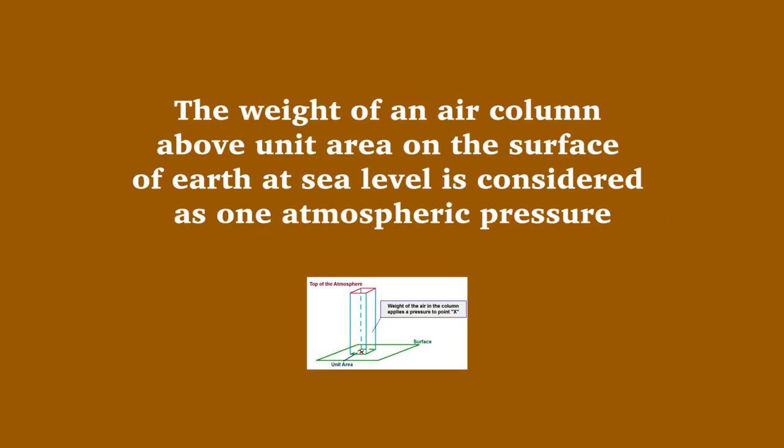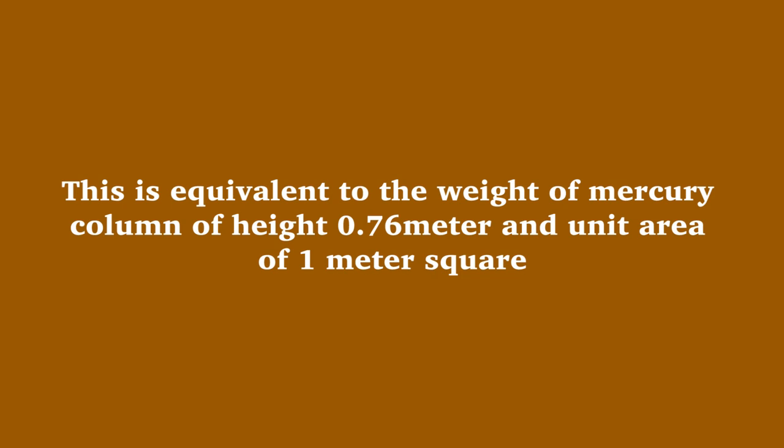The weight of an air column above unit area on the surface of the earth at sea level is considered as 1 atmospheric pressure. This is equivalent to the weight of mercury column of height 0.76 meter and unit area of 1 meter square. This is standard atmospheric pressure. The unit of the atmospheric pressure is bar.